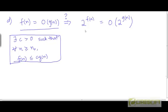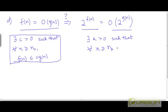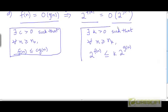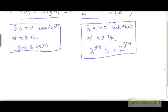We need to prove that 2 to the power f is O(2 to the power g) — that there exists a constant K > 0 such that for all n larger than or equal to some threshold n_K, 2 to the power f is less than or equal to that constant times 2 to the power g. So how do we go about proving this?